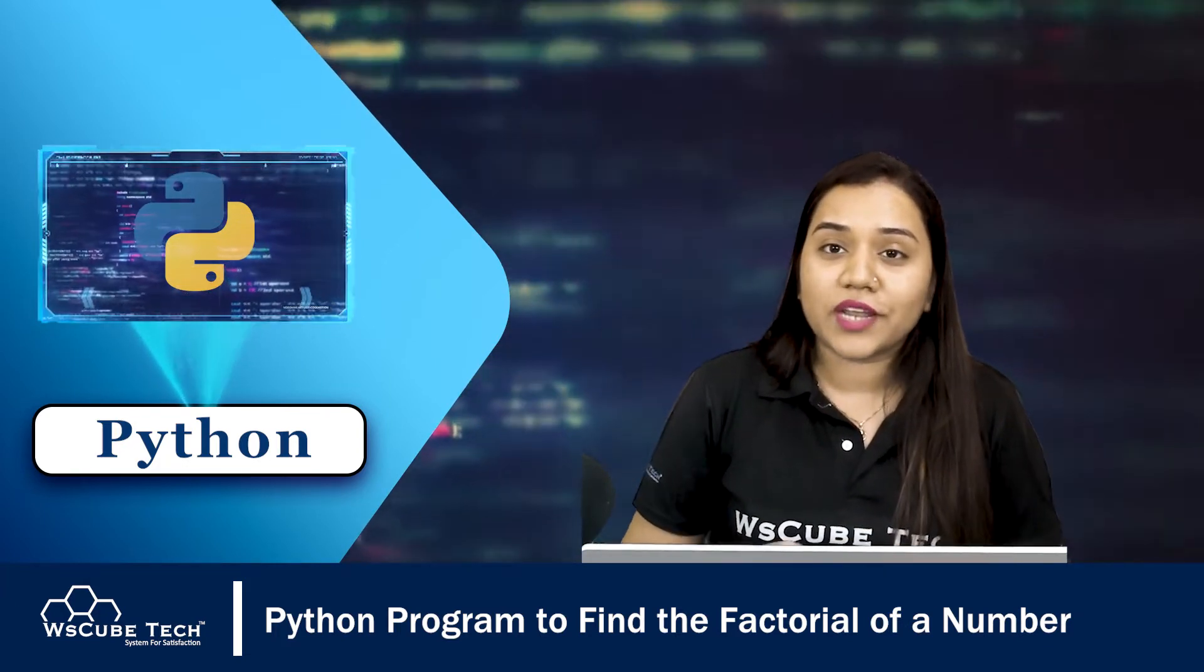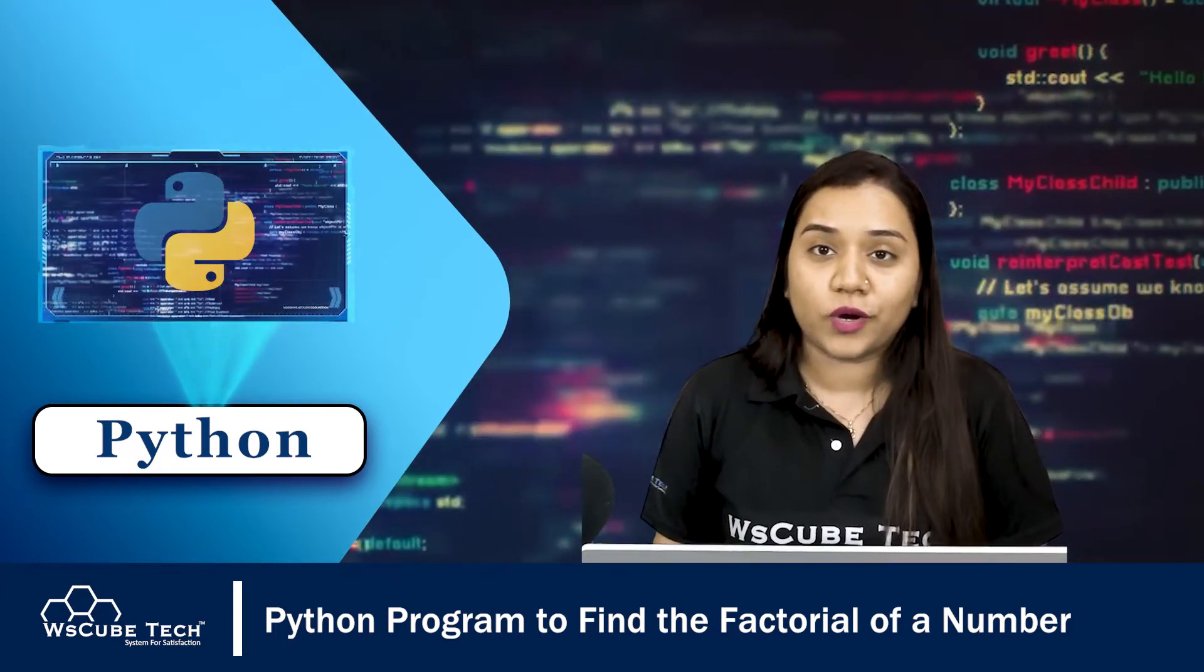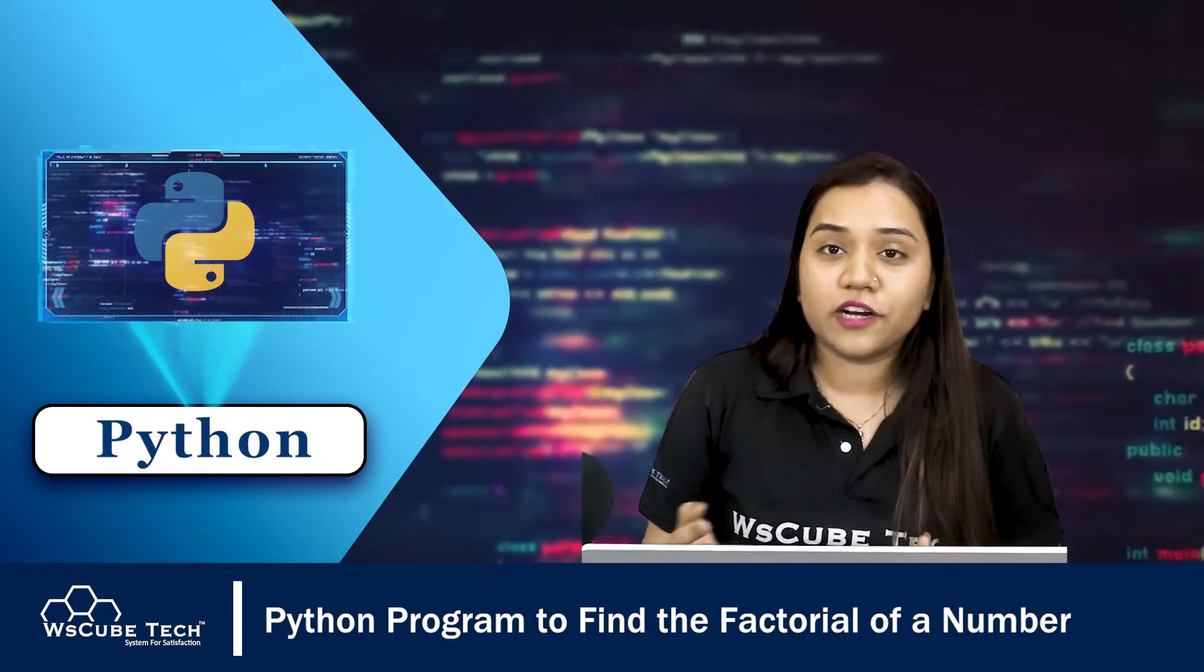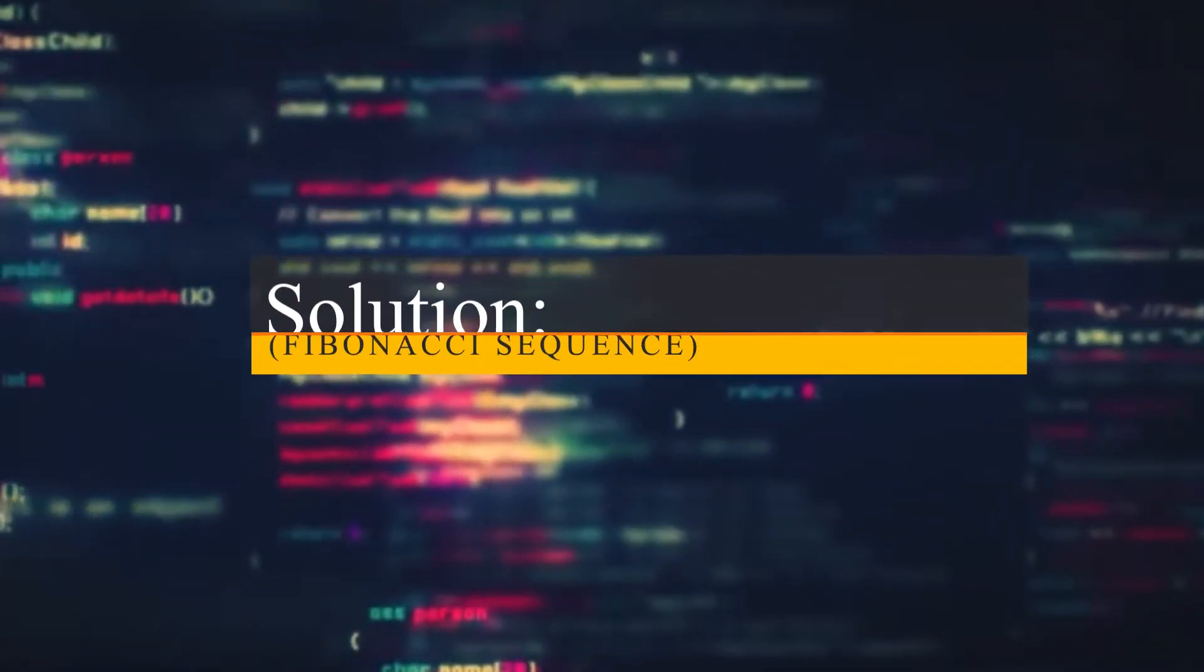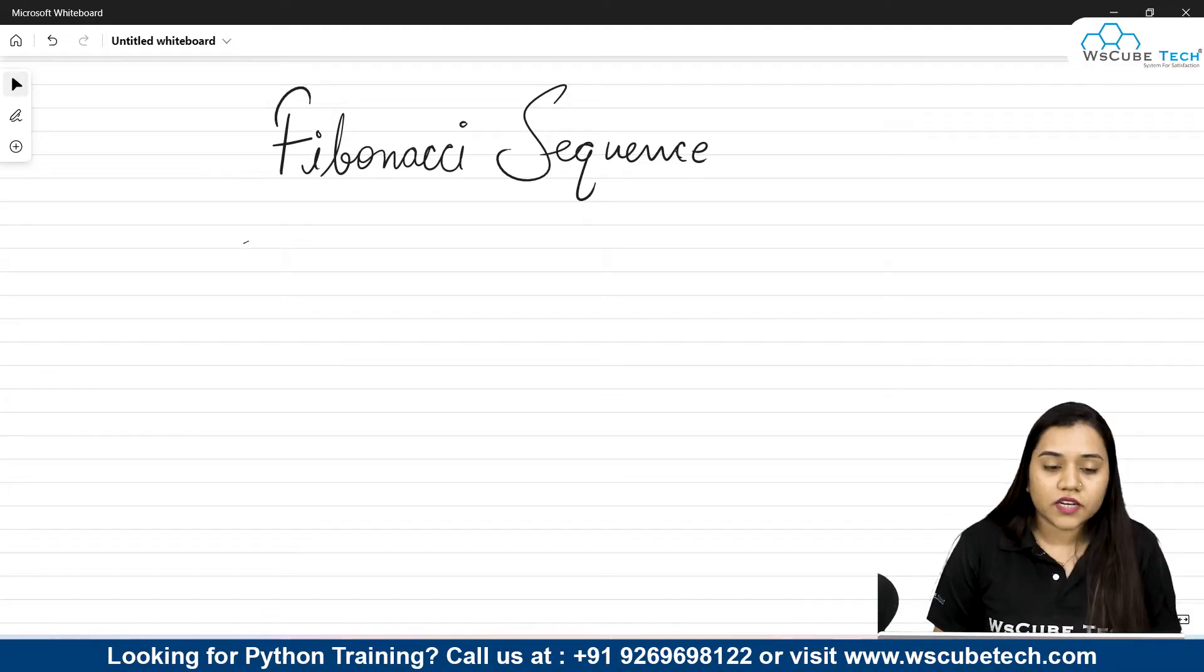Now first step to write a Fibonacci sequence, a person should first know what is Fibonacci sequence. So let's understand what is Fibonacci sequence. In the Fibonacci sequence the first element is 0 and the second element is 1. It is a sequence of numbers.